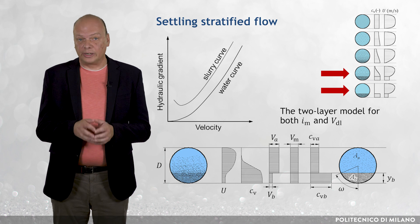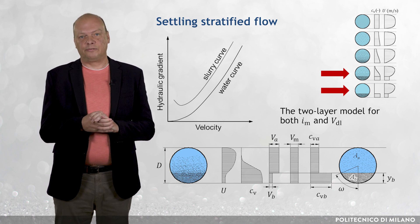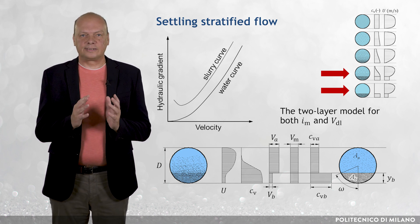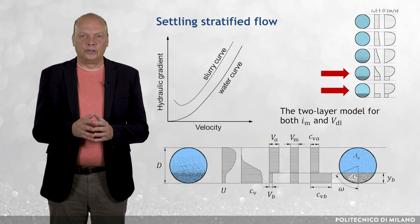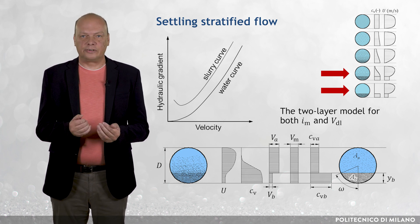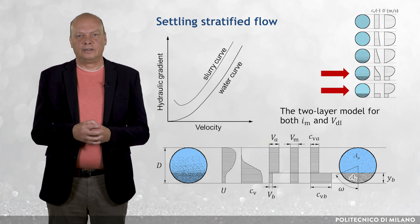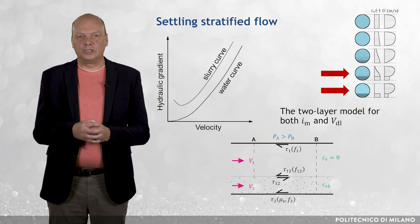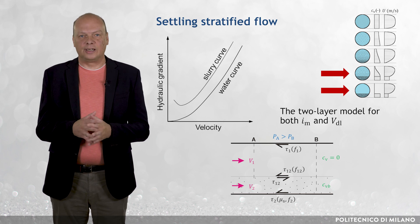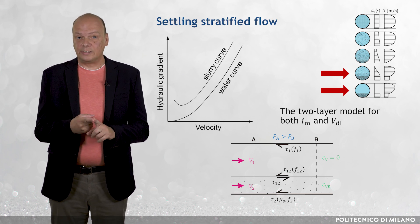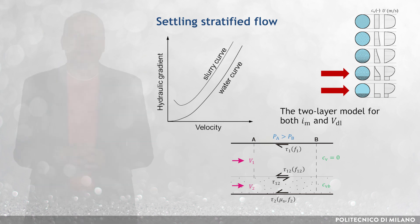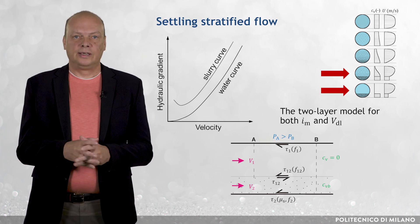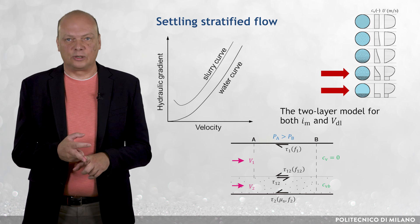Layered models, such as the two-layer model, are applicable to fully stratified flows and partially stratified flows of settling slurries. The model simplifies the internal structure of flow to a layered structure and considers mean values of flow quantities in each layer. A layered model formulates force balances for each individual layer, and besides the frictional hydraulic gradient, it solves velocities and thicknesses of the layers. Note that layered models are also applicable to complex non-Newtonian flows which tend to stratify due to the presence of coarse particles.